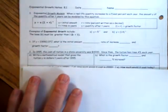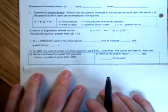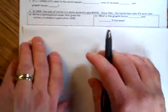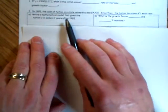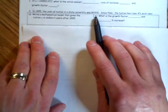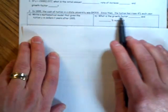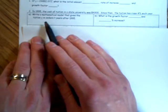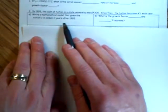Let's take a look at what we have below this, parts A and B. In 1995, the cost of tuition at a state university was $4,300. Since then, the tuition has risen 4% each year.